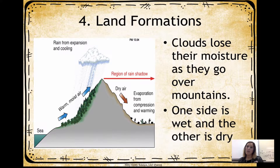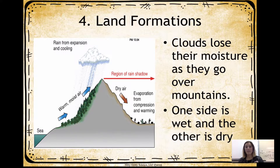Where you are located according to land formations also determines climate. On the seaside of a mountain you get warm, moist air and a lot of precipitation. On the region of the rain shadow on the other side of the mountain, it's very dry air. Clouds lose their moisture as they go over mountains, so the seaside has a lot of precipitation, but the opposite side is going to be very dry.